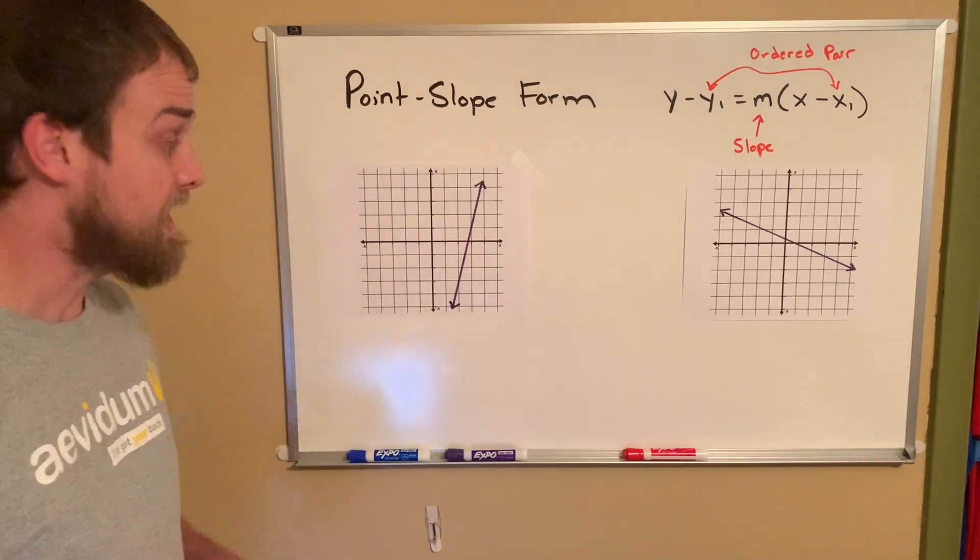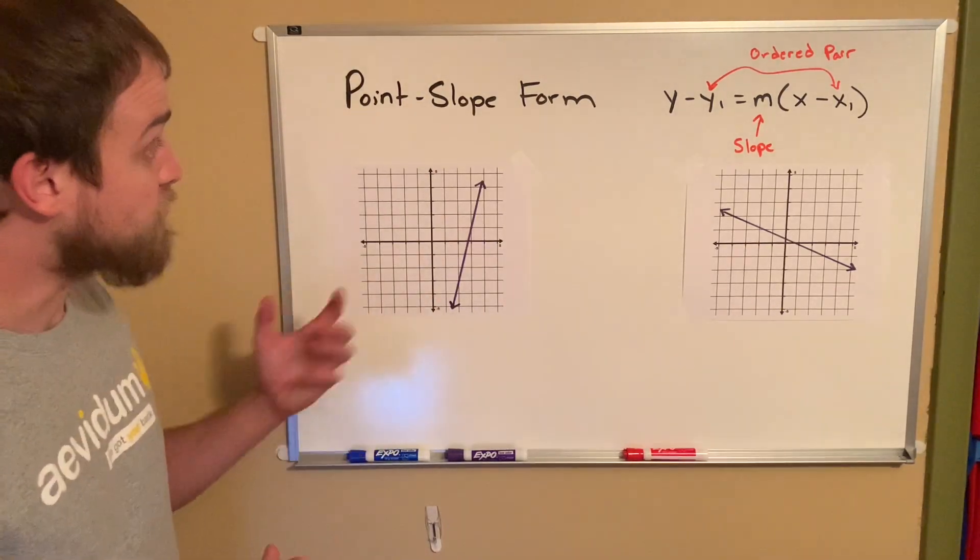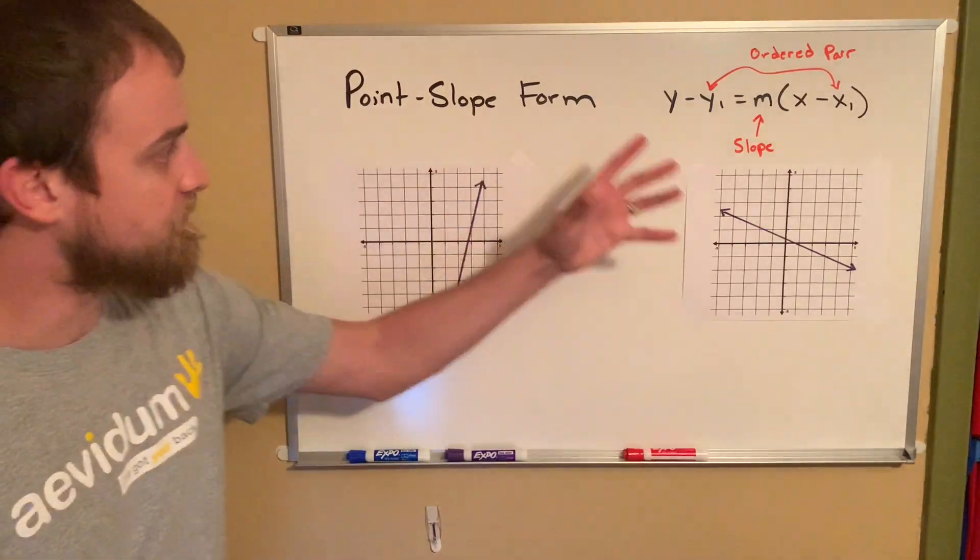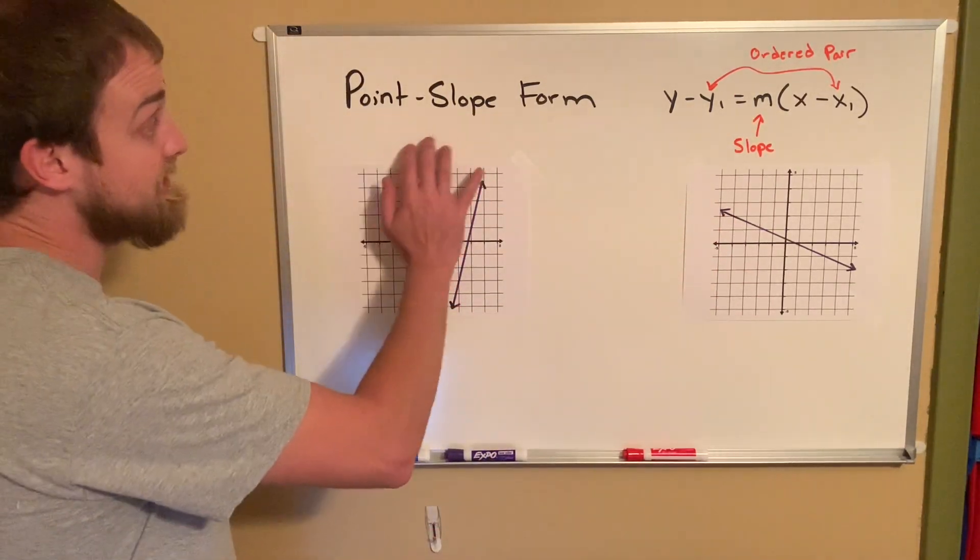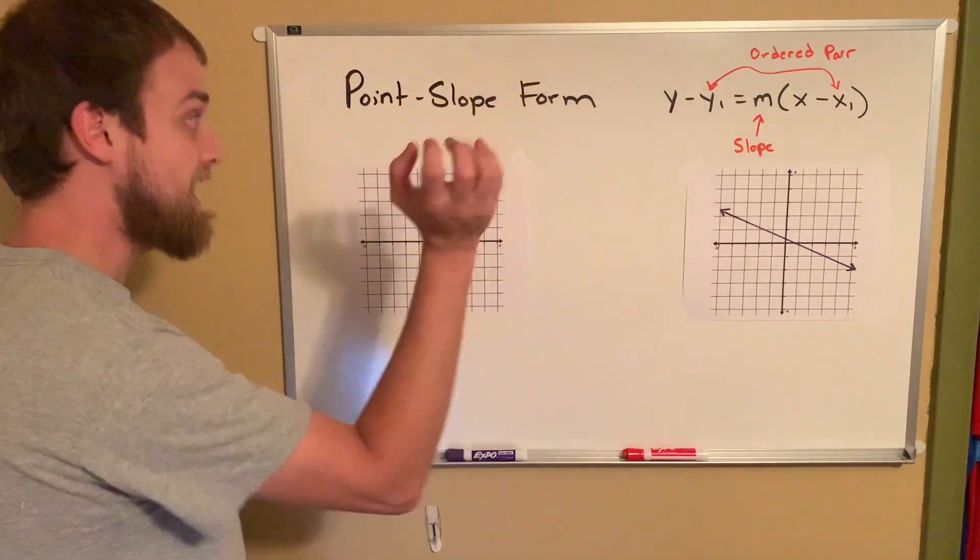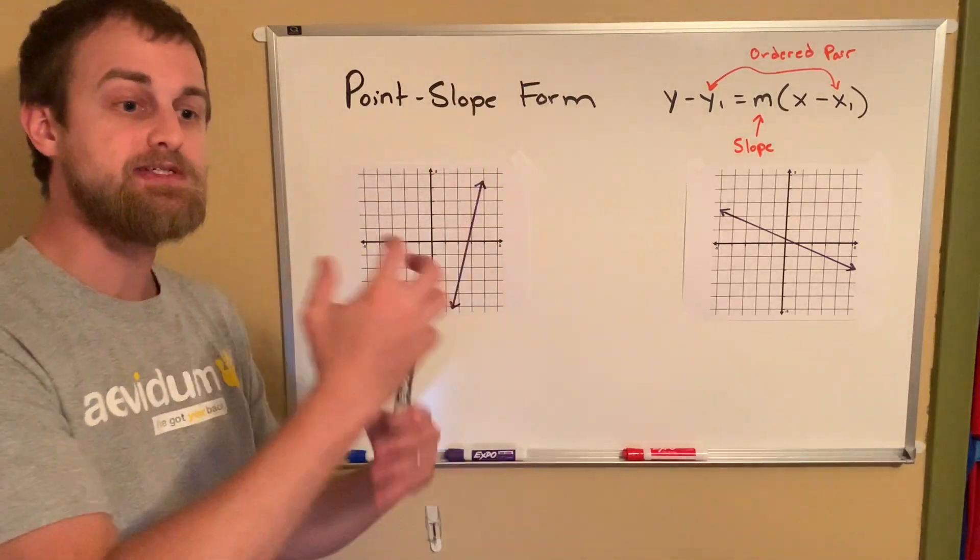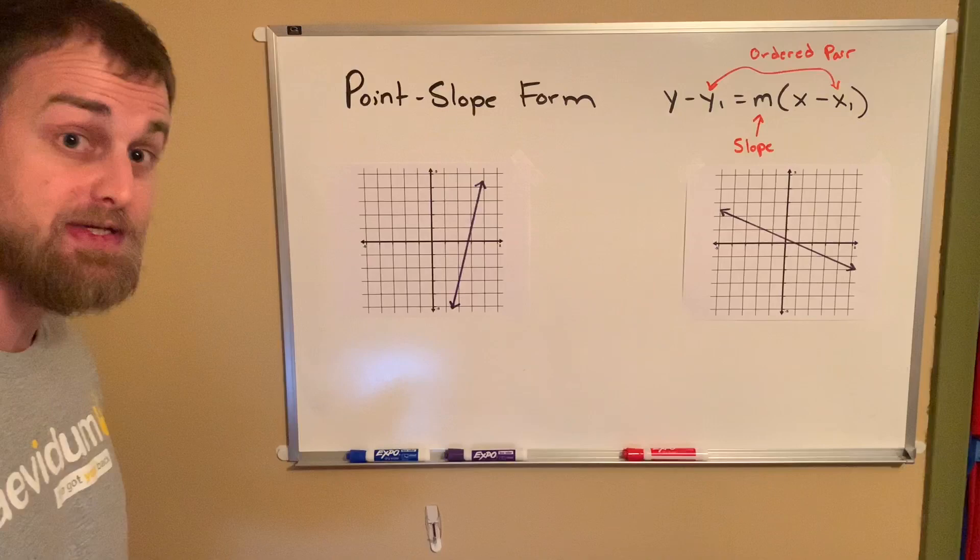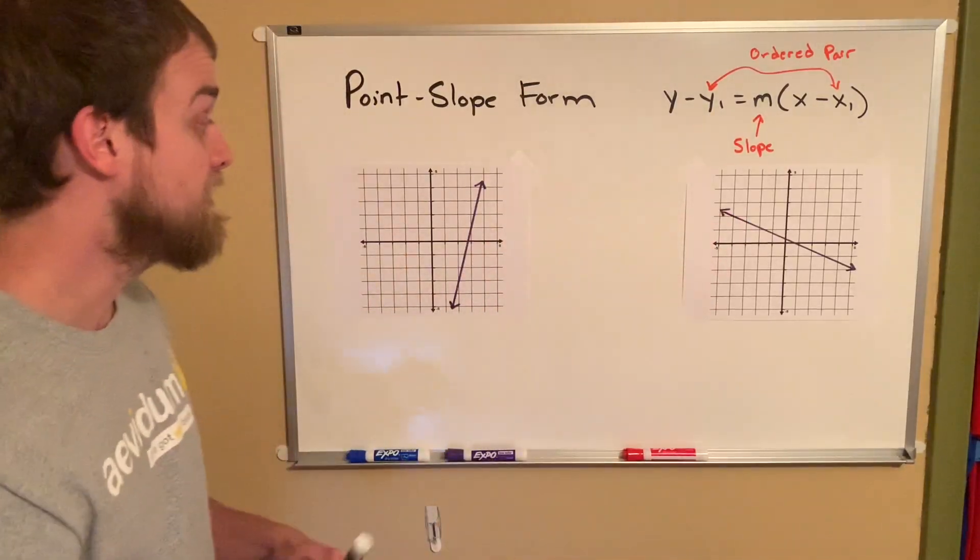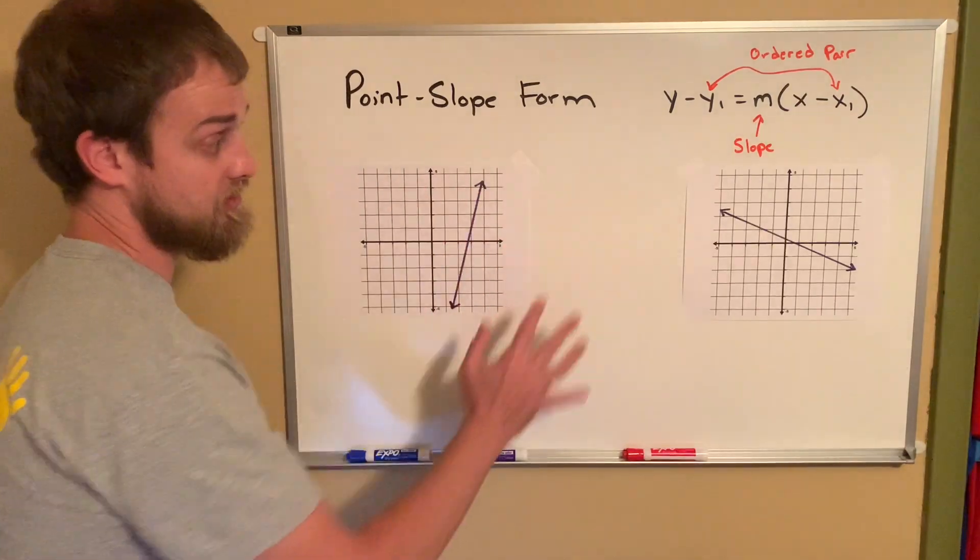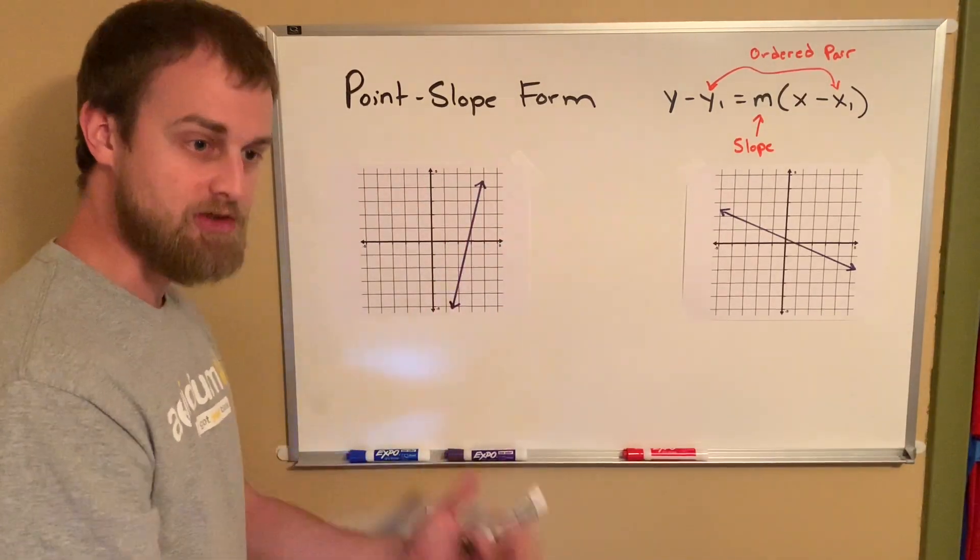Hey guys, Bistari. Today I want to look at, can we write an equation in point-slope form given the graph? Now remember the two pieces of information we need: we need an ordered pair and a slope. It just comes down to identifying those two pieces of information and then building our equation. For every graph, we're going to be looking for the slope and an ordered pair.